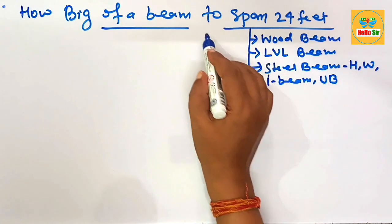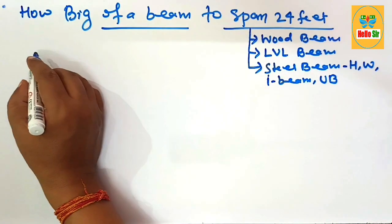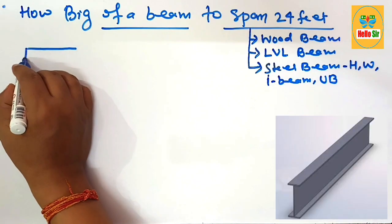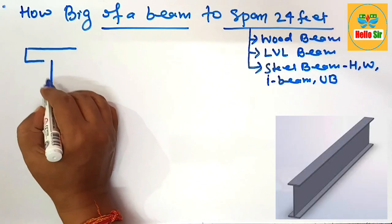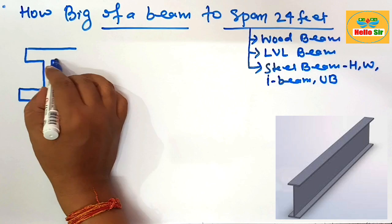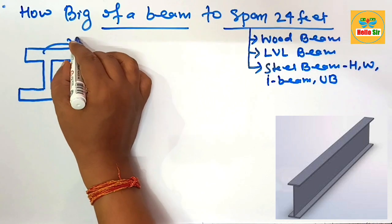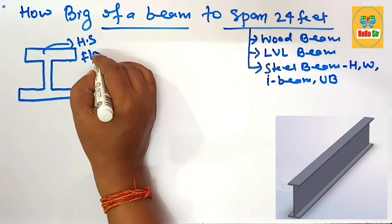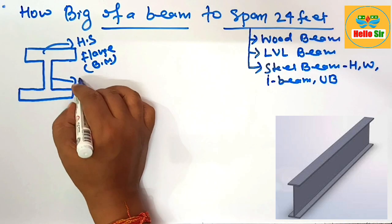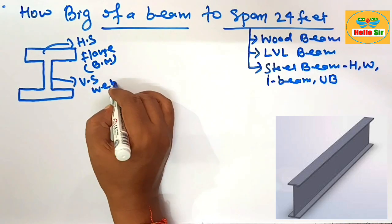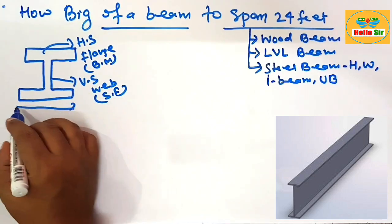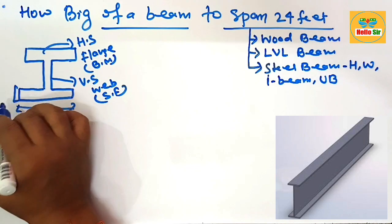There are three different types of beam structure. Here we make a rough diagram to understand the steel beam structure, also known as the American wide flange beam, denoted by W-beam. The horizontal section is known as the flange, which generally resists bending moment. The vertical section is known as the web, which generally resists shear forces. The width and thickness of the flange are also shown.